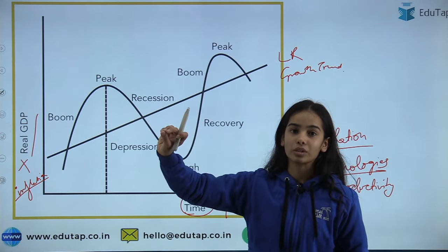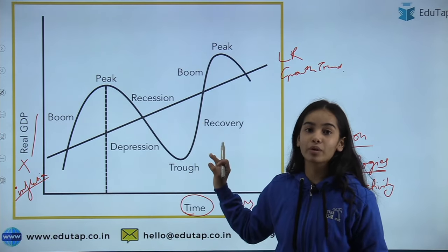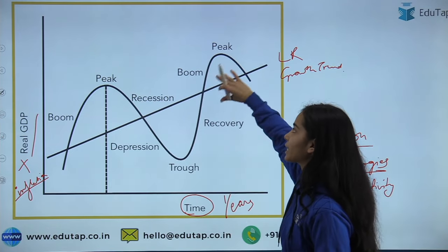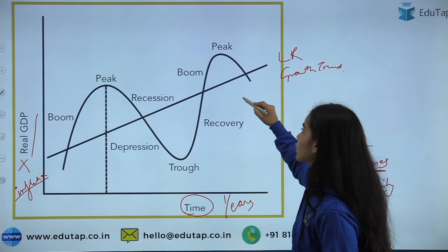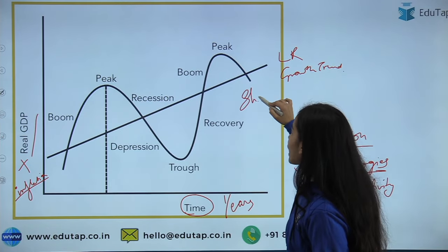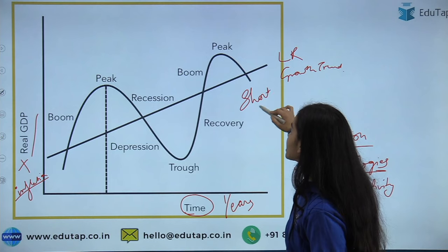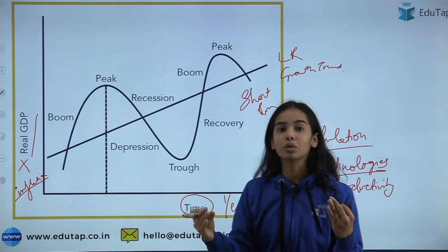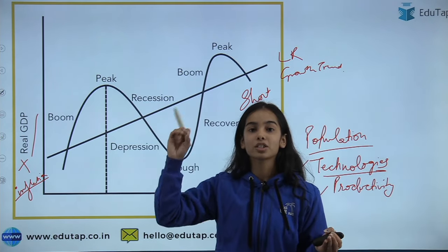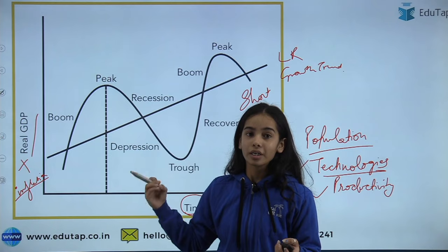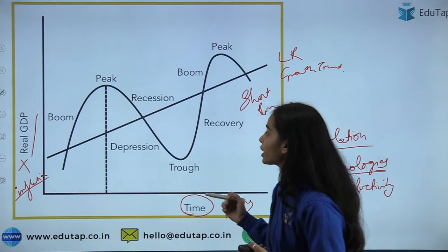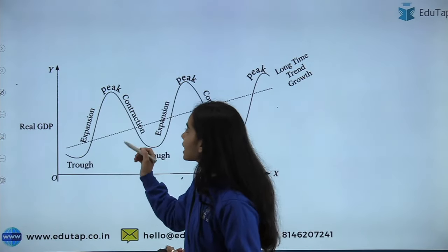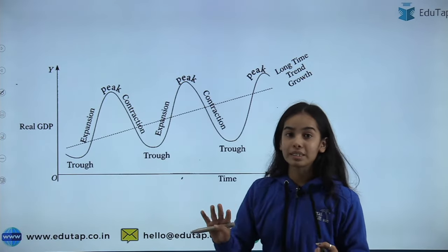But can we say we have seen a smooth path of growth in the short run also? No — in the short run there is much up and down that can be seen in the economy. Not only in India but in every economy of the world, there are ups and downs that happen in the short run. Here we can see that there are four phases of the business cycle.